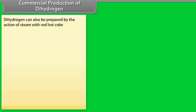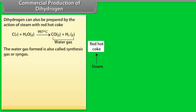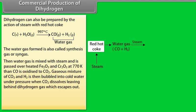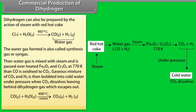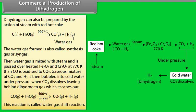Commercial production of dihydrogen. Dihydrogen can be prepared by the action of steam with red hot coke as given below. The water gas formed is also called synthesis gas or syngas. Then water gas is mixed with steam and is passed over heated Fe2O3 and Cr2O3 at 770 Kelvin, then CO is oxidized to CO2. Gaseous mixture of CO2 and H2 is then bubbled into cold water under pressure when CO2 dissolves leaving behind dihydrogen gas which escapes out. This reaction is called water gas shift reaction.